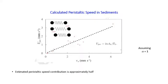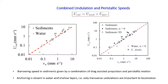Since undulation accounts for about 50% and peristalsis accounts for about 50%, we combined them using superposition — adding contributions of both strokes for each worm example studied. Plotting the combined predicted speed versus observed speed, with black triangles for sediment data and blue circles for water data, the data organizes itself along a slope of one over many orders of magnitude, well described by the simple superposition of two strokes.